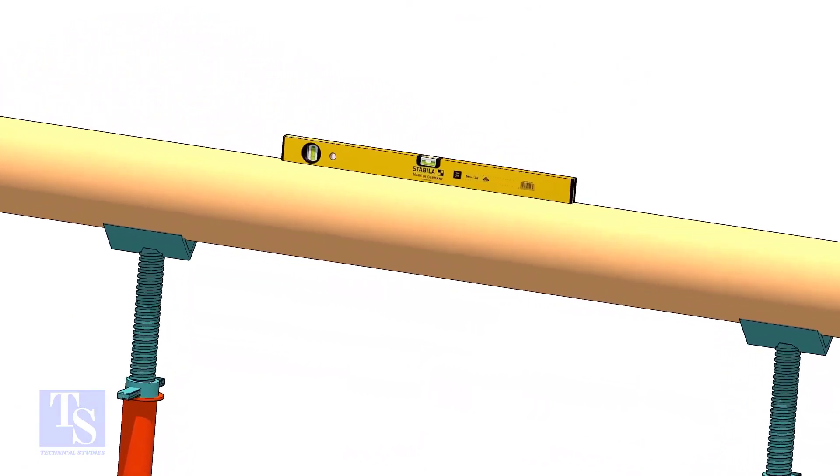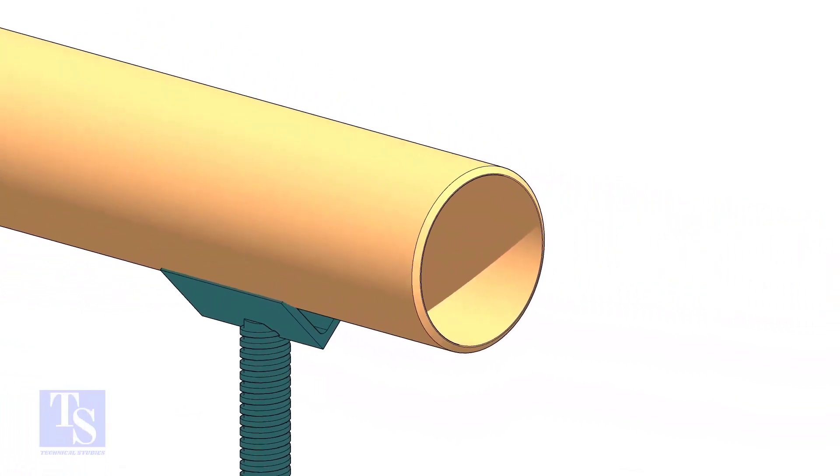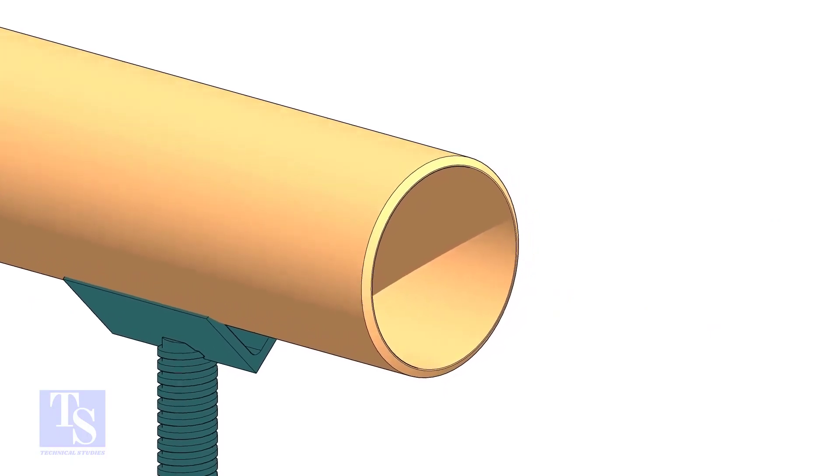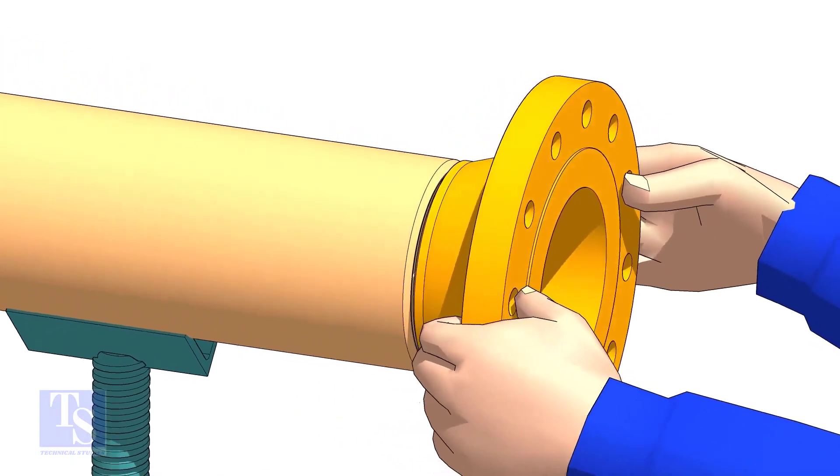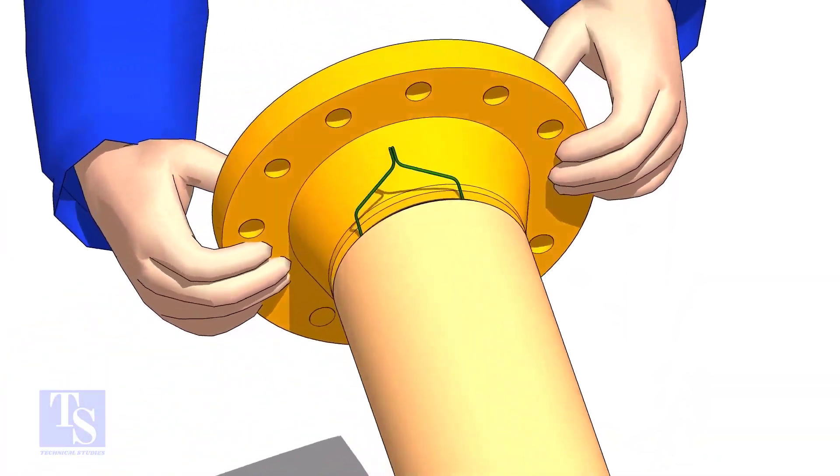Level the pipe. Hold the flange on the pipe face as shown. Put the gap rod in the joint. Look through the flange and the pipe, and adjust the overlap.